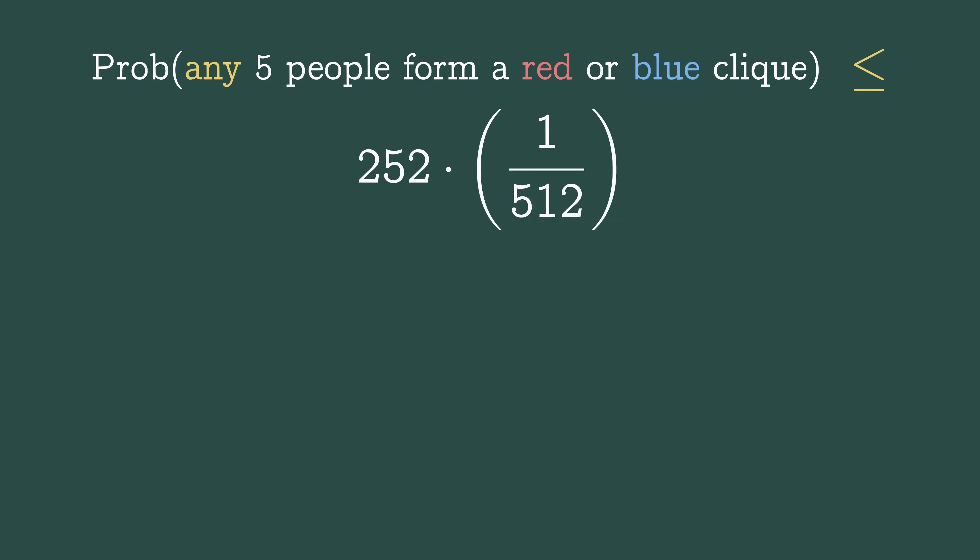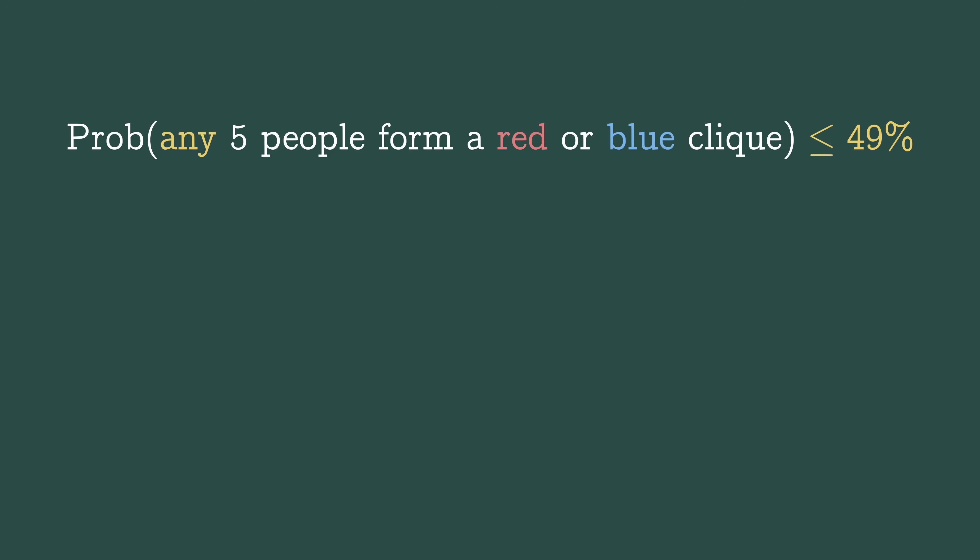less than or equal to 252 times one over 512, which is roughly 0.49 or 49%. Let's flip that statement on its head. There is at least a 51% chance that a random party will not have a red or blue five-person clique.